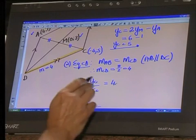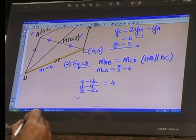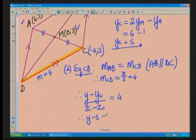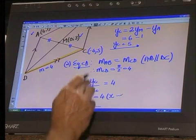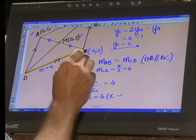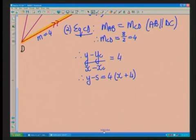To find the equation of CD, we use the point gradient formula: Y minus the Y value of C divided by X minus the X value of C is equal to the gradient of 4. All that's left is to substitute in. The Y value of C is 5, so I've got Y minus 5, which is equal to 4 times X minus the X value of C, which is negative 4. Be careful: there's a negative and there's a negative 4, so this becomes a double negative, which changes it to a plus 4.